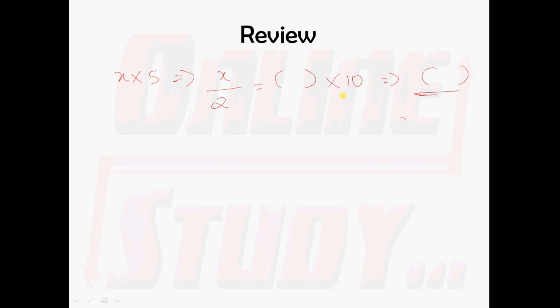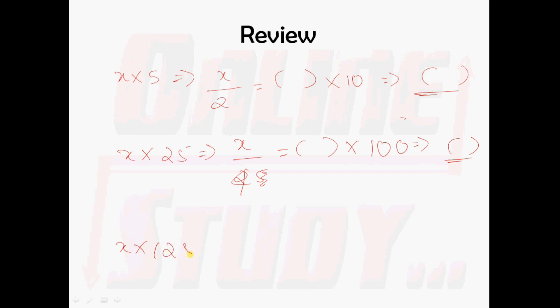I hope you understood this technique. Now let's review all the techniques discussed. For multiplying by 5: divide the number by 2 and multiply the result by 10. For multiplying by 25: divide the number by 4 and multiply the result by 100. For multiplying by 125: divide the number by 8 and multiply the result by 1000. And you will get your final product.